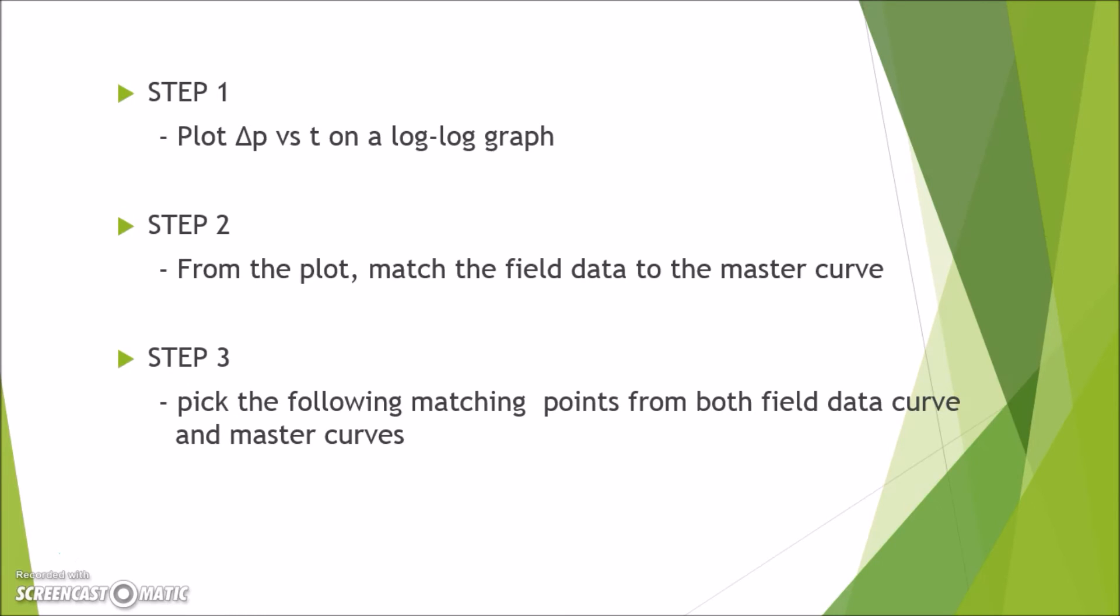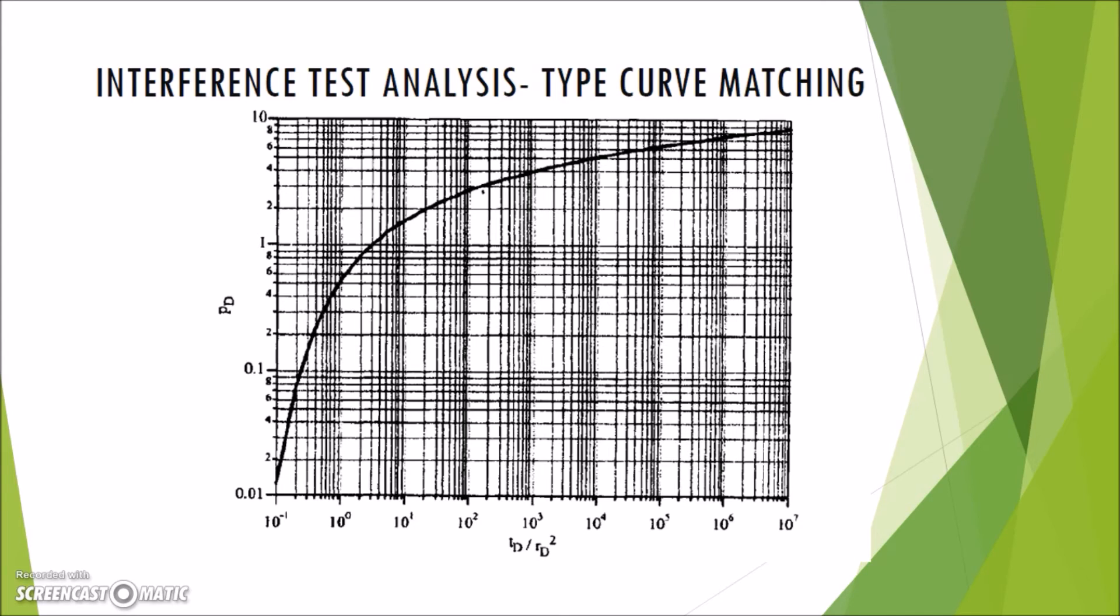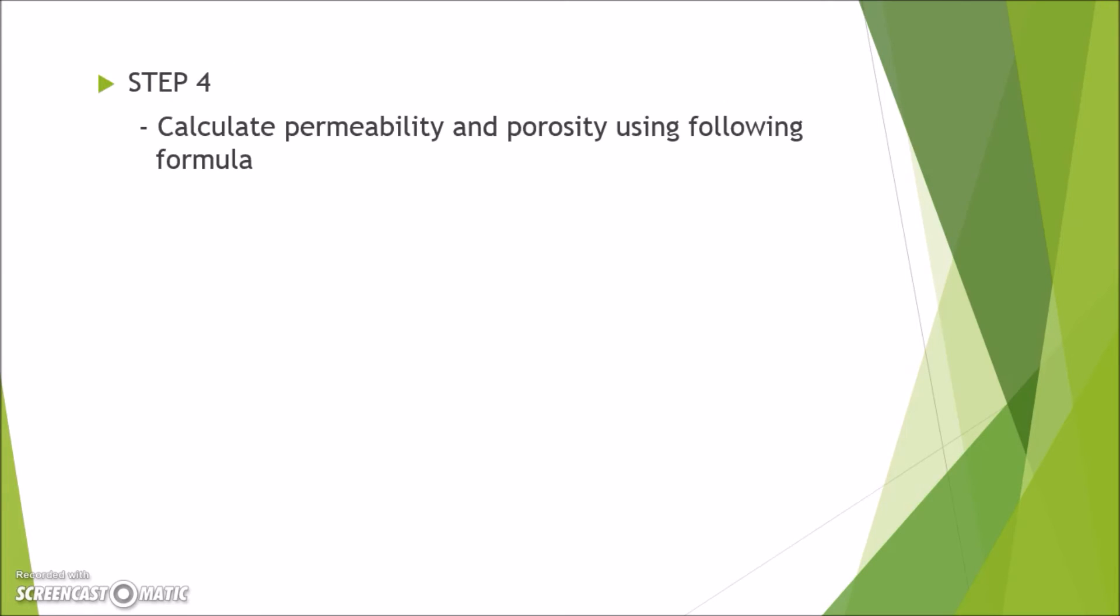The step three is picking the match points from both graphs. To make it easier, pick the intersection of the squares of your plotted graph, and from there, select the respective matching points from the master curve. Jot down the values of each matching points. Delta P and T are from your plotted curve, and P and TDRD square are from the master curve. This is how the master curve looks like. After all the matching points are obtained, we can now proceed to step four, which is calculating the permeability and porosity using the given formula. For permeability, the formula is as follows. After we calculated the value of permeability, we can proceed with the porosity calculation. And the formula is as follows.